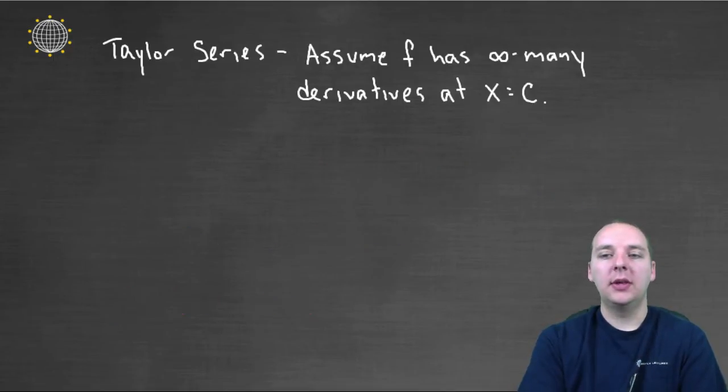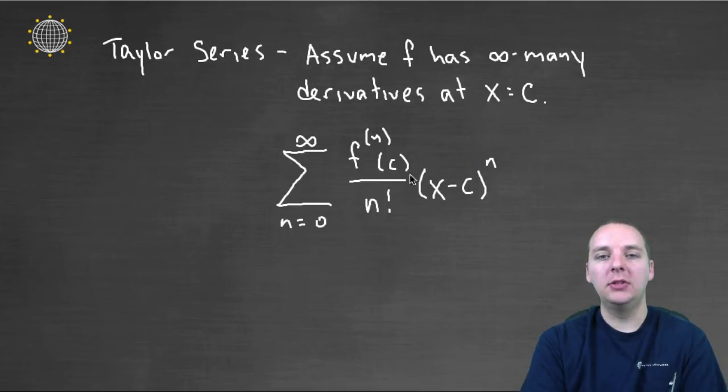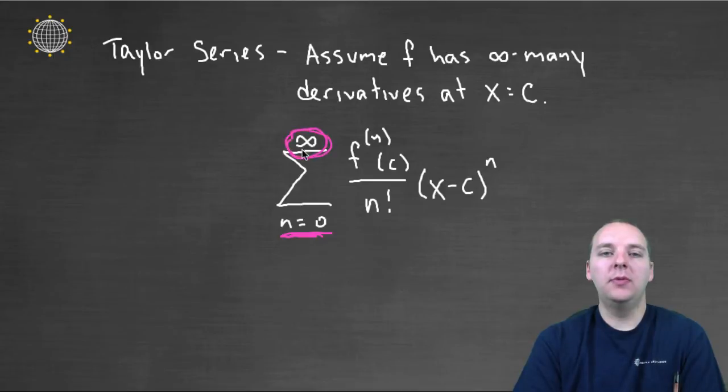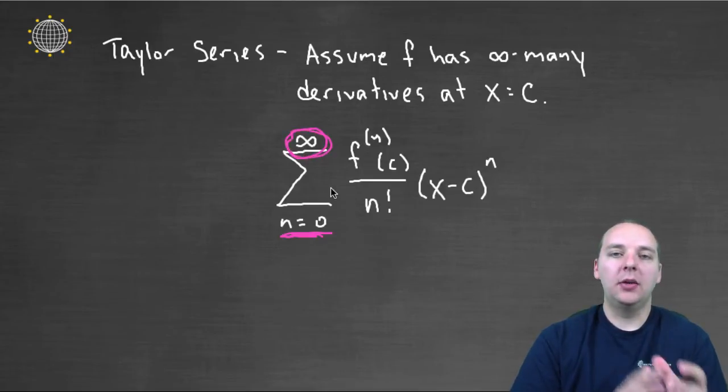And the fourth and the fifth. So I think we've discovered the pattern of the generic term, and we would let this go from zero, not up to a finite stopping point, but up to infinity. And this would not be a Taylor polynomial, it would be a Taylor series.